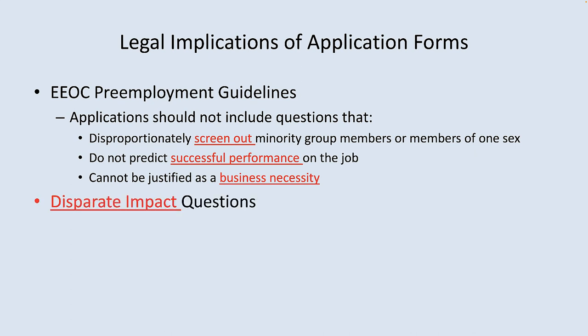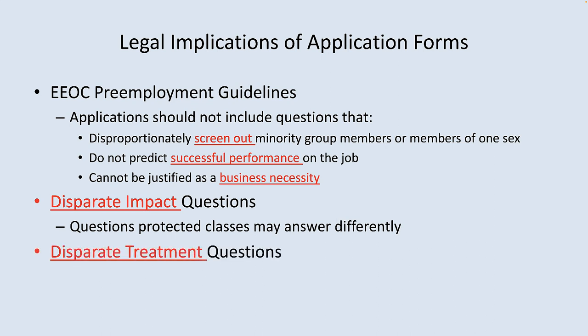Applications should also avoid disparate or adverse impact questions, which are questions that protected classes may answer differently. For example, you should probably not ask 'what part of town did you grow up in?' Some companies do make up their own applications — if you're doing so, don't ask stupid questions. Applications should also avoid disparate treatment questions, which are different questions asked to different groups. Everyone should get the exact same benign job-related questions that are designed to predict job success.